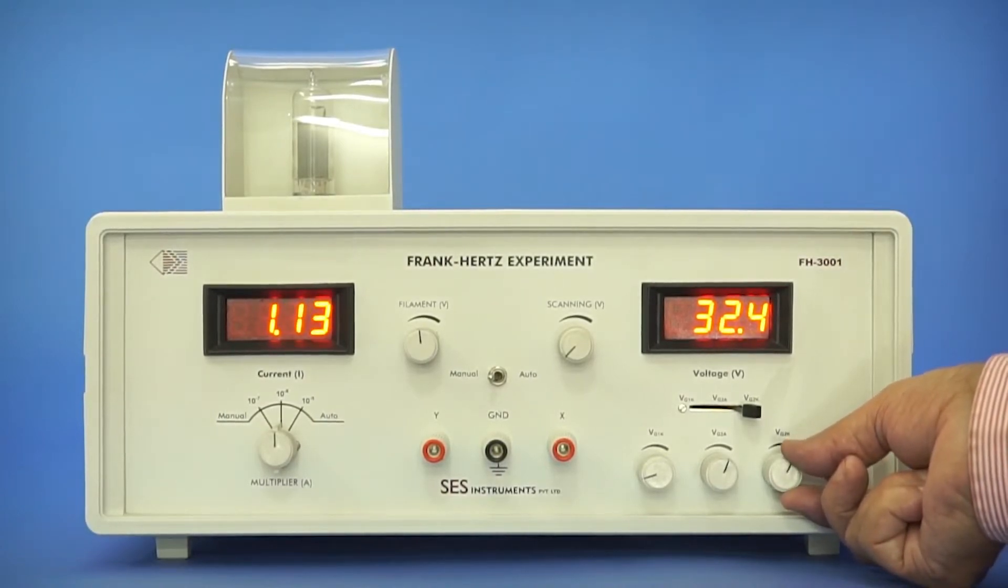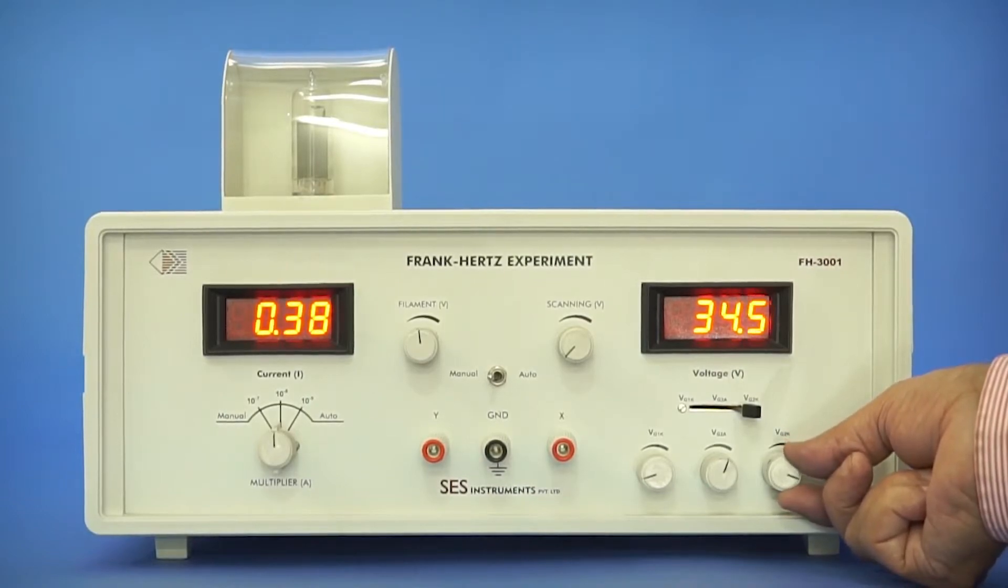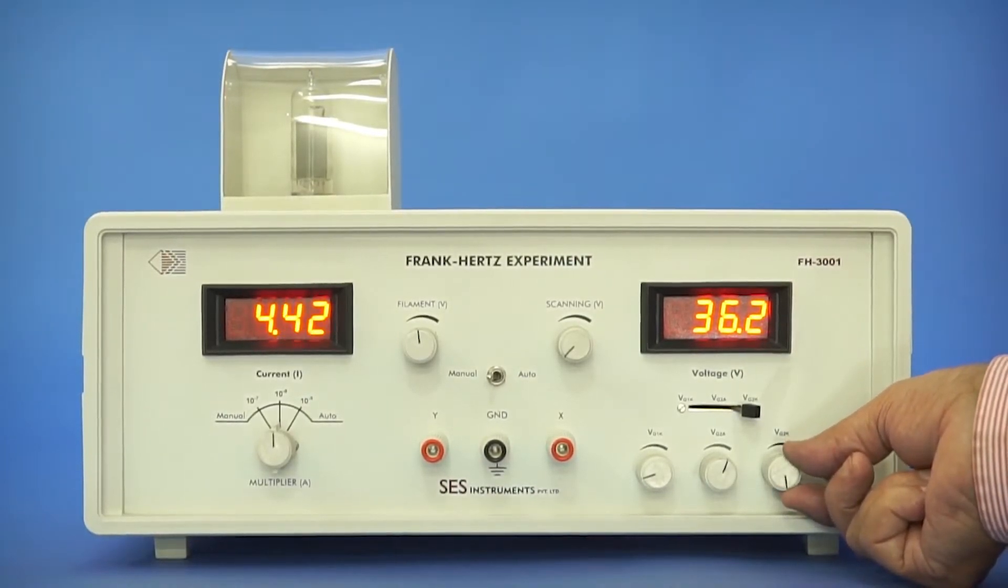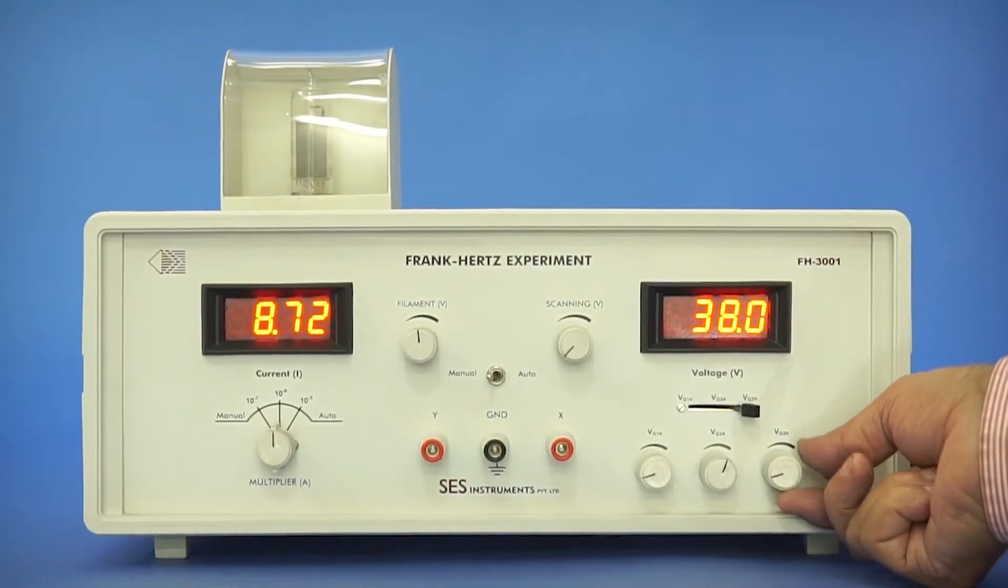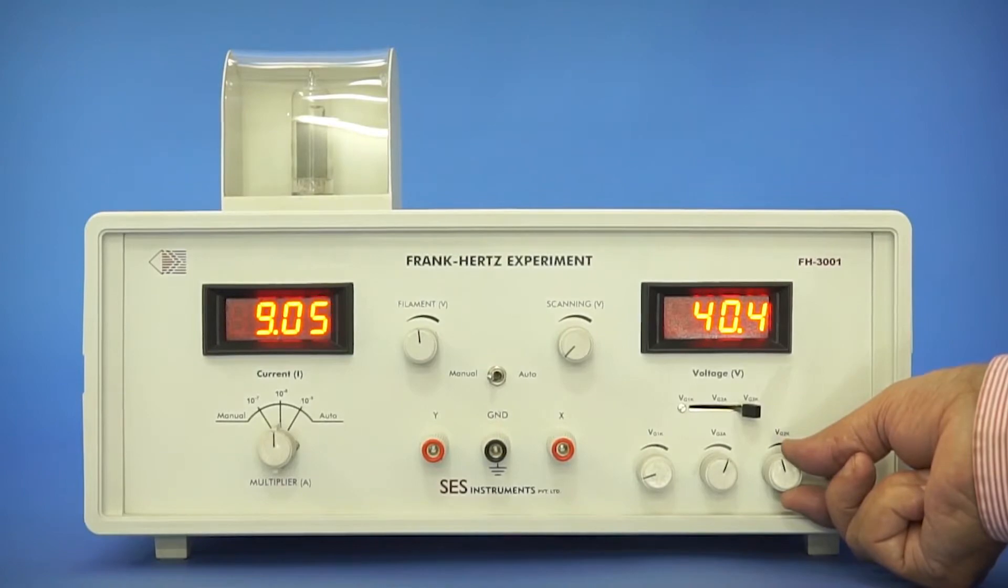Like this, we will increase the VG2K value till 90V and record all corresponding current values in our worksheet.